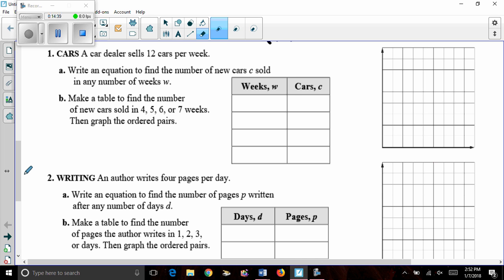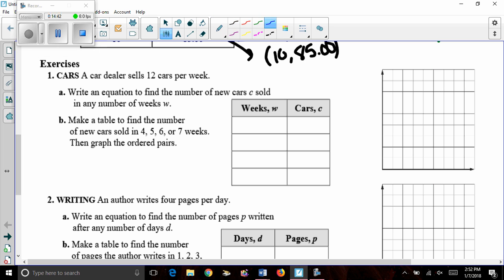Problem number one, cars. A car dealer sells 12 cars per week. Per means to multiply. And I'm going to take a look at how I can use that. Write an equation to find the number of new cars sold, which is C, in any number of weeks, W. Well, if I go back, I've already noted that I have to do 12 times something. Well, it says 12 per week, so that's 12 per W. So, 12 times W, or 12W, well, that's going to equal that total number of new cars. So, for part A, I could create the equation C equals 12W. That original description gives me a hint on which letter belongs where.